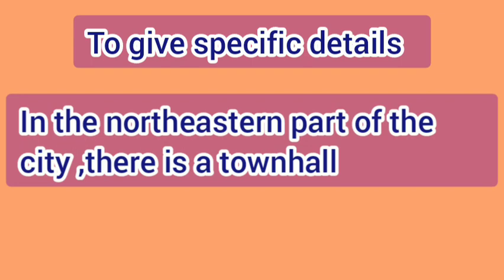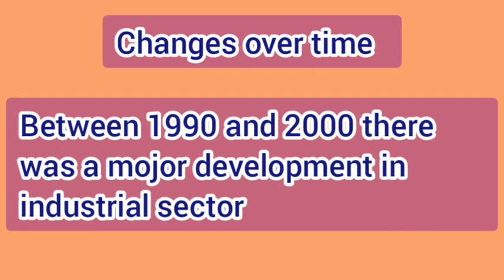When describing a specific location, you can write: 'In the north-eastern part of the city, there is a town hall.' When describing change over time, you can write: 'Between 1990 and 2000, there was a major development in the industrial area.'